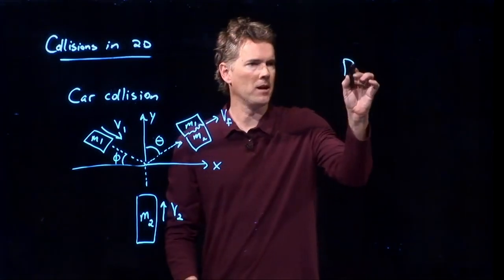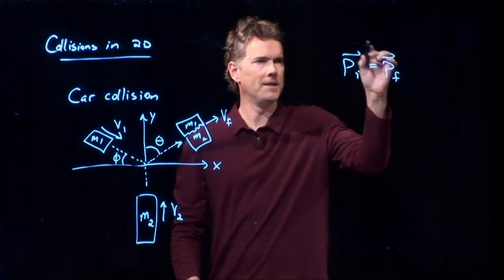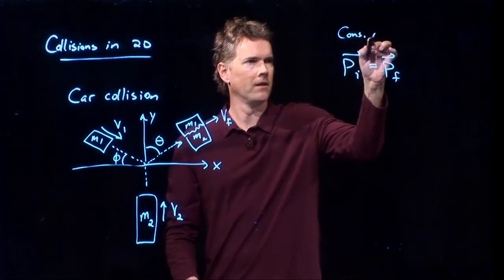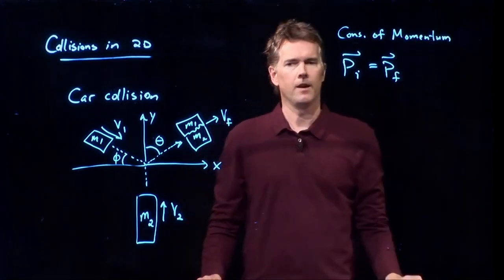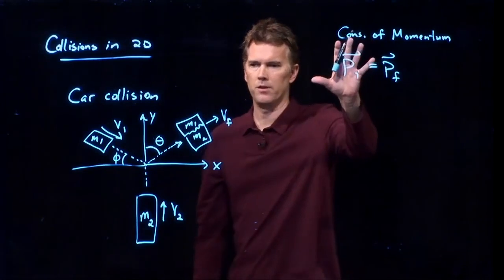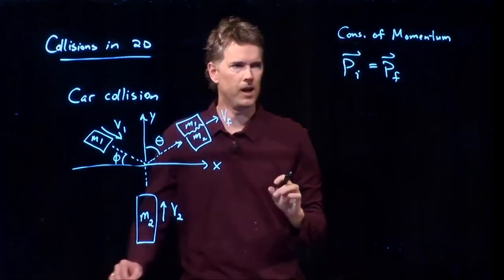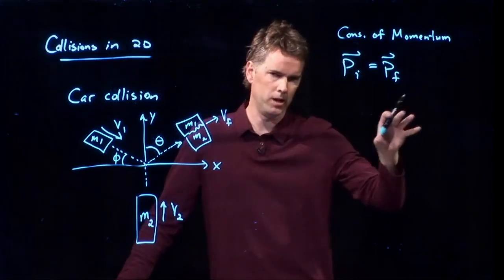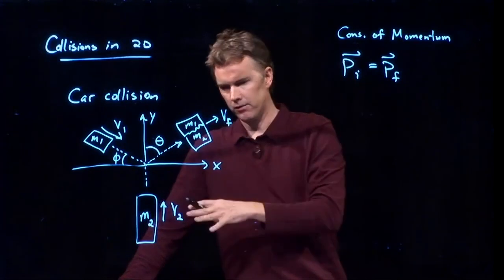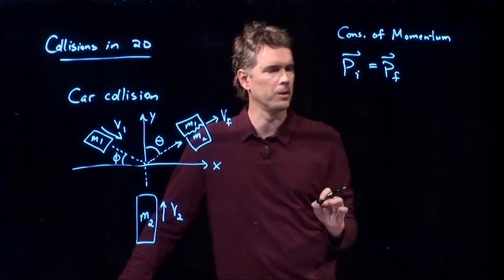And now we can write down conservation of momentum. It tells us that p initial is equal to p final. And those are vectors. And each one has two elements in it. We have an M1 and an M2 on the left side. We have an M1 and an M2 on the right side. We have x components. We have y components. We have a lot in there. So let's expand this a little bit.